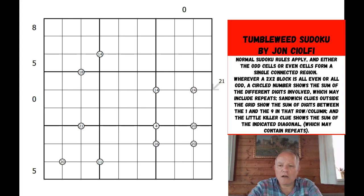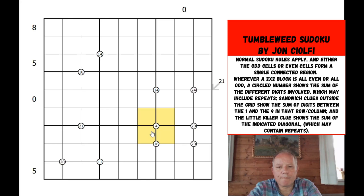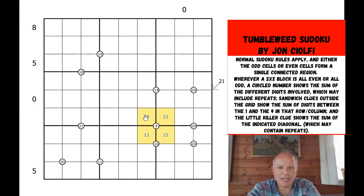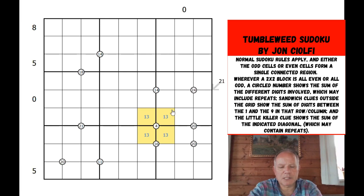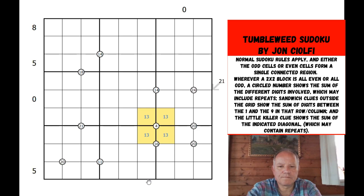Those are the rules — Simon calls the puzzle Tumbleweed. Do feel free to try it on the link below the video. I'm going to get cracking now with no idea where I'm going to start. There's a four box there, and given it has to contain different digits, it can't be all twos or anything, so it's one and three — a pair of ones and threes.